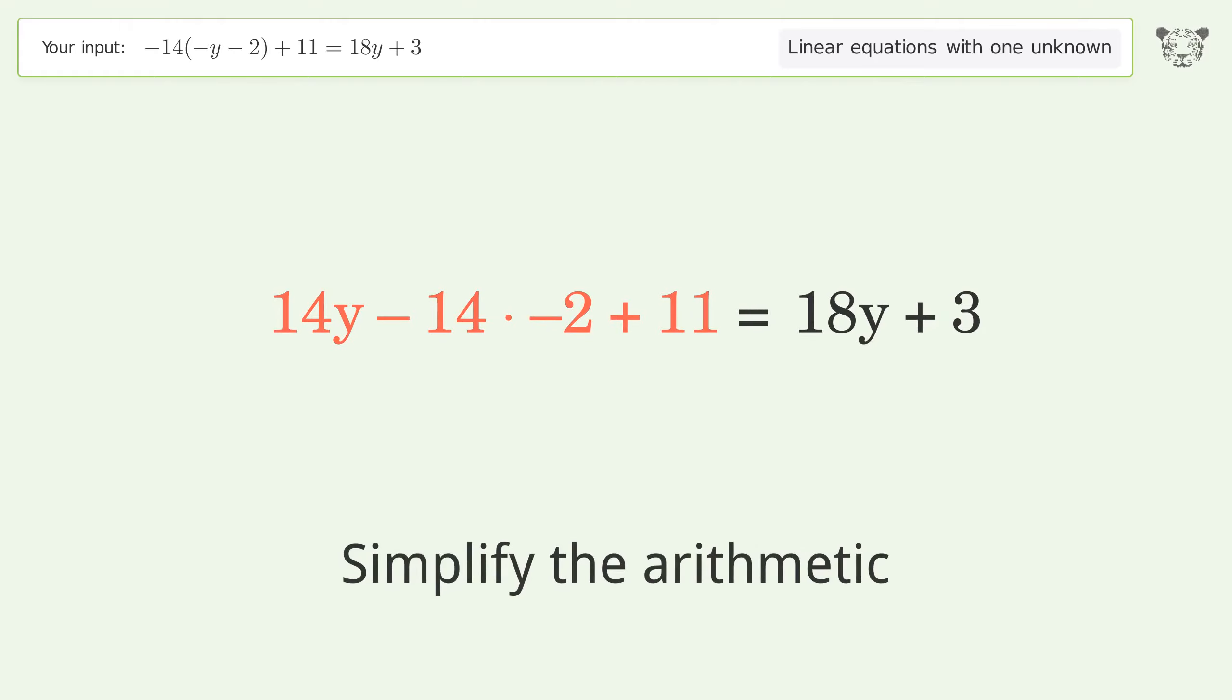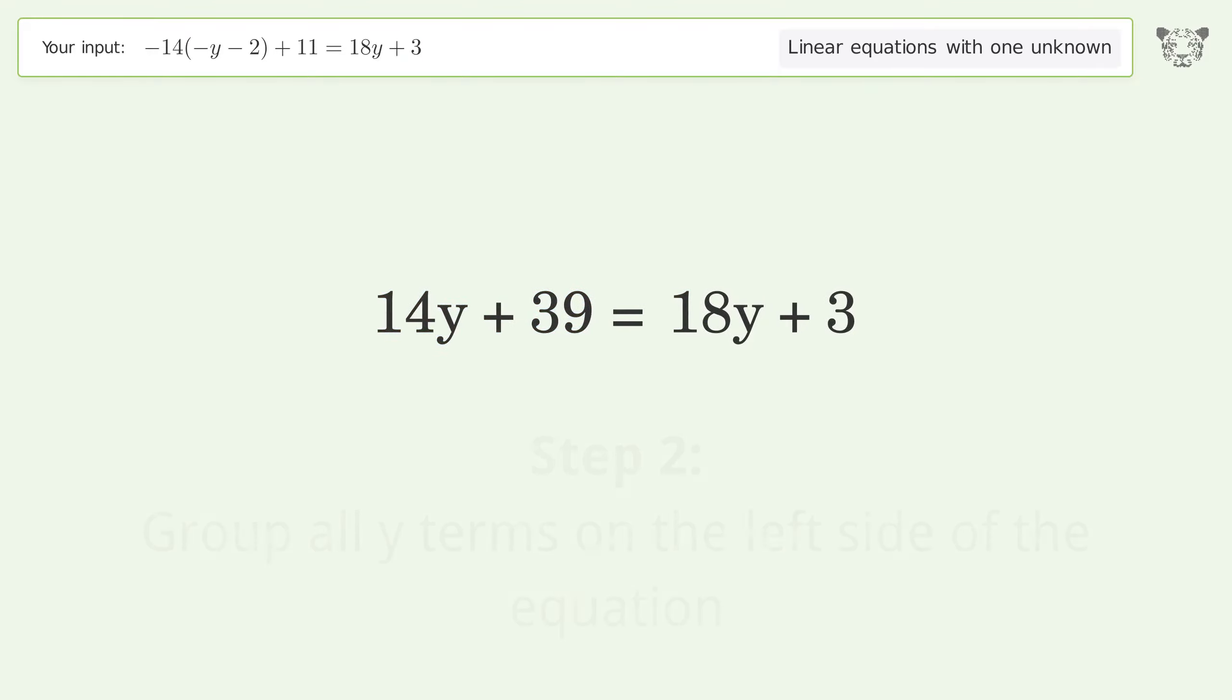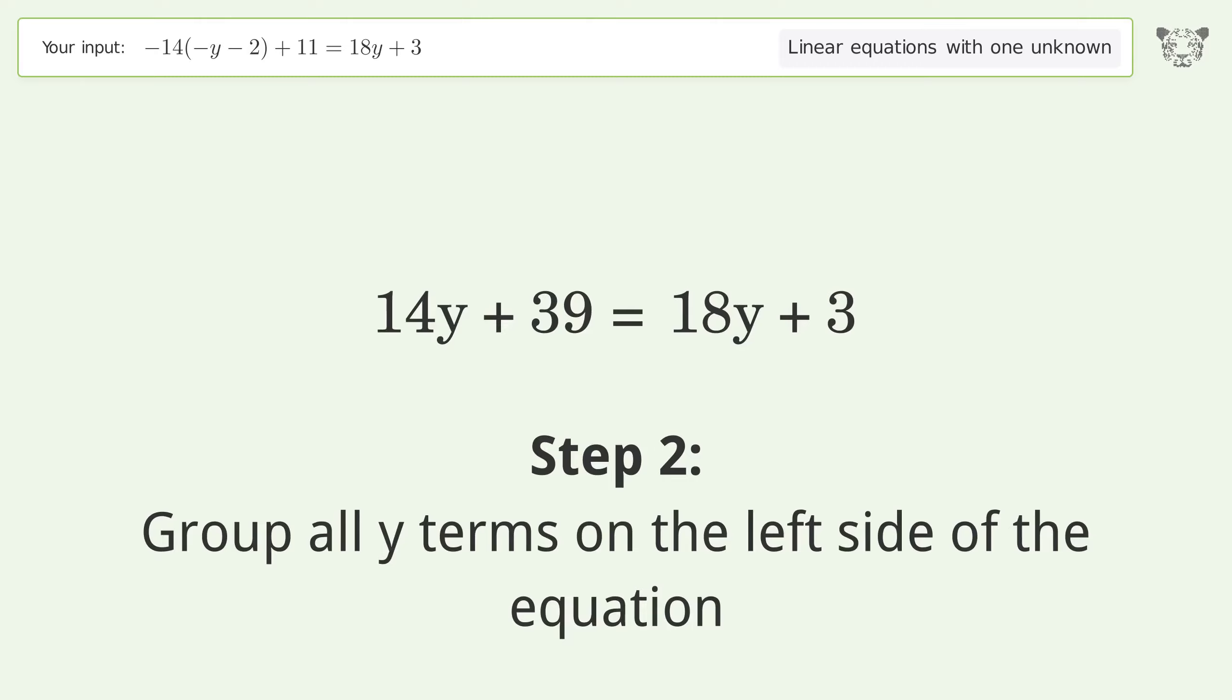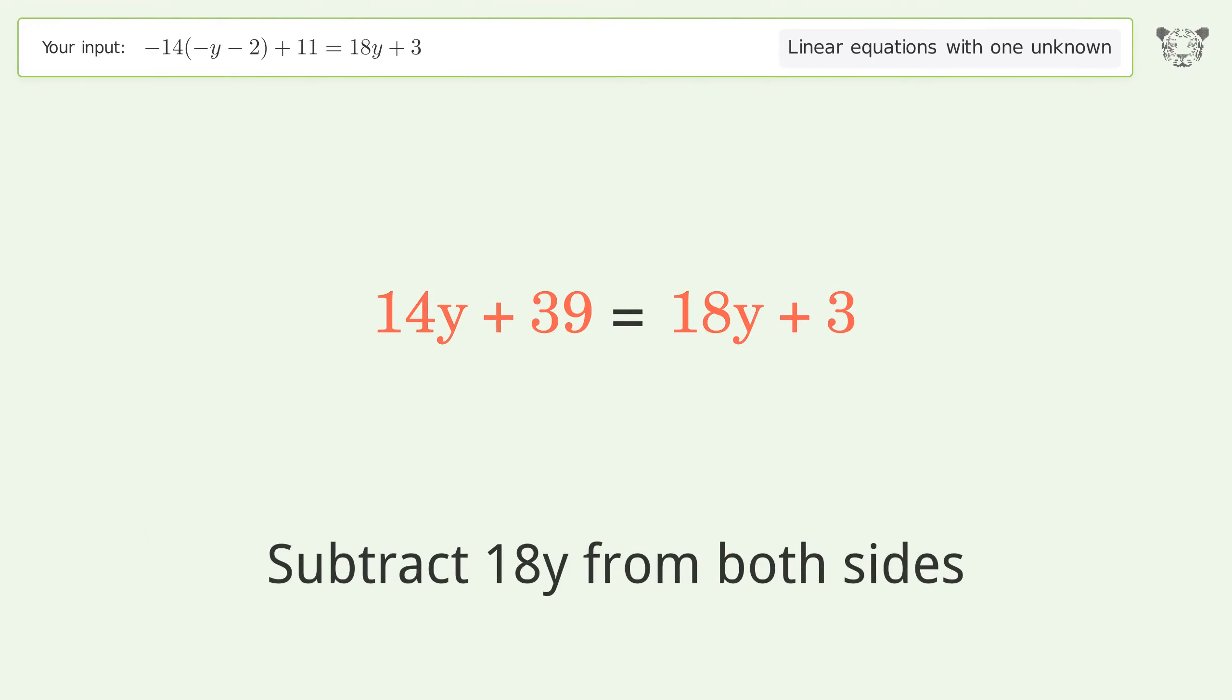Simplify the arithmetic. Group all y terms on the left side of the equation. Subtract 18y from both sides.